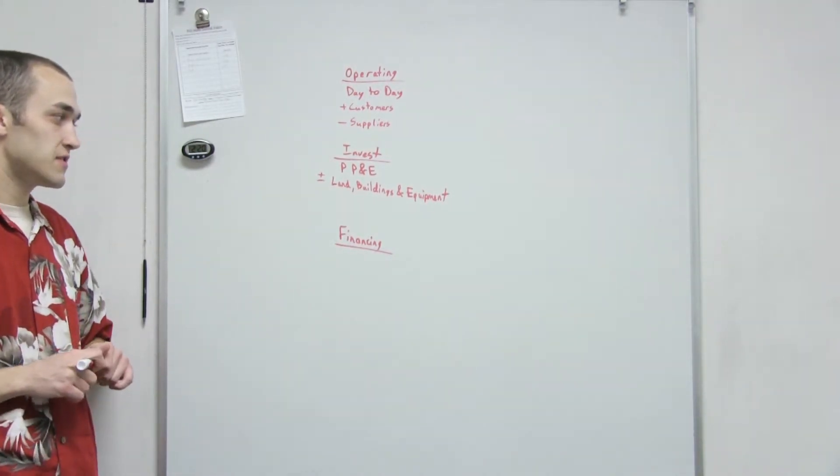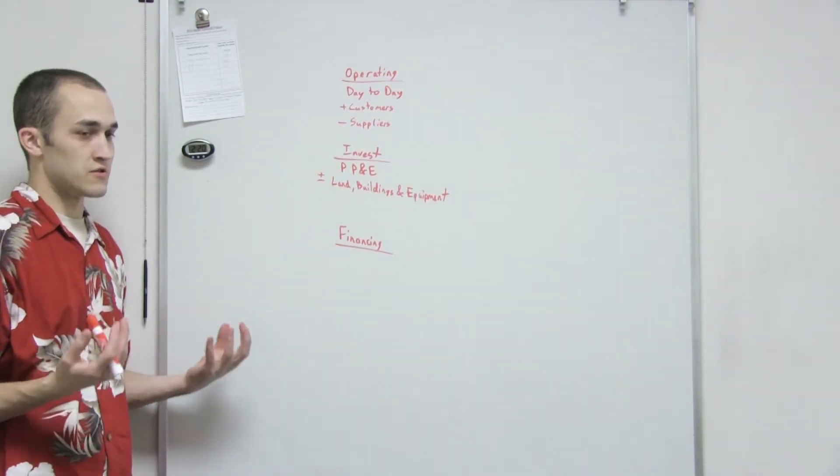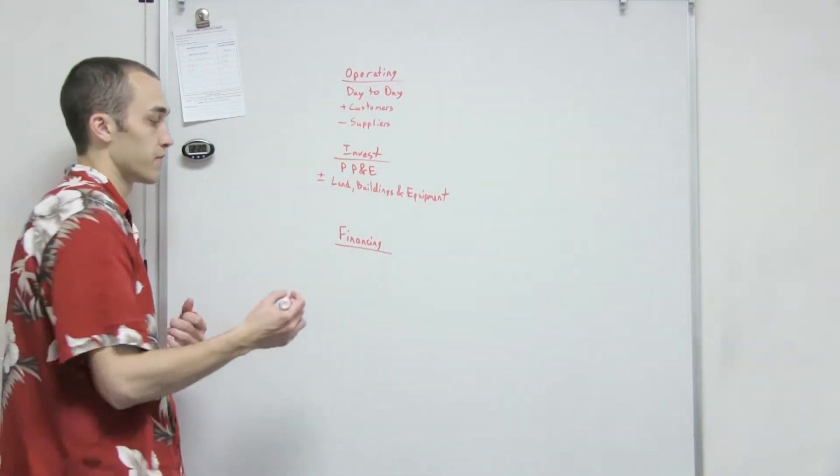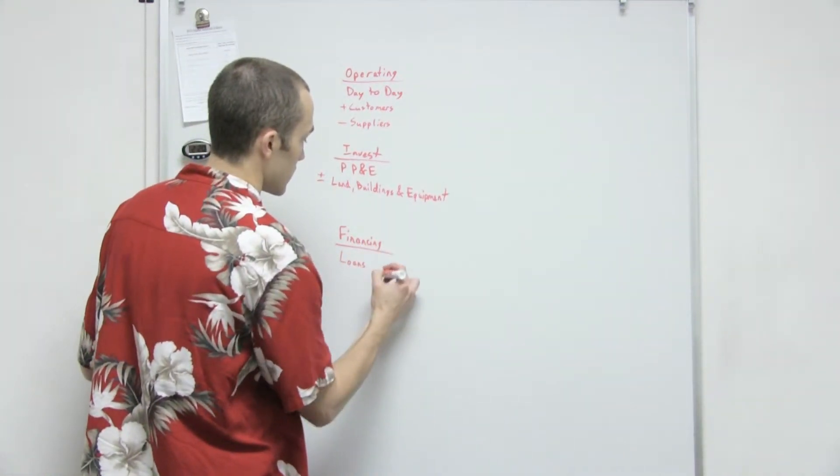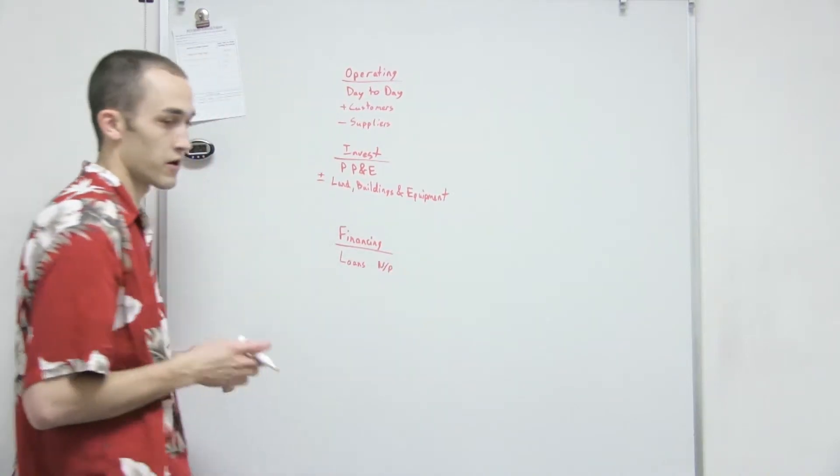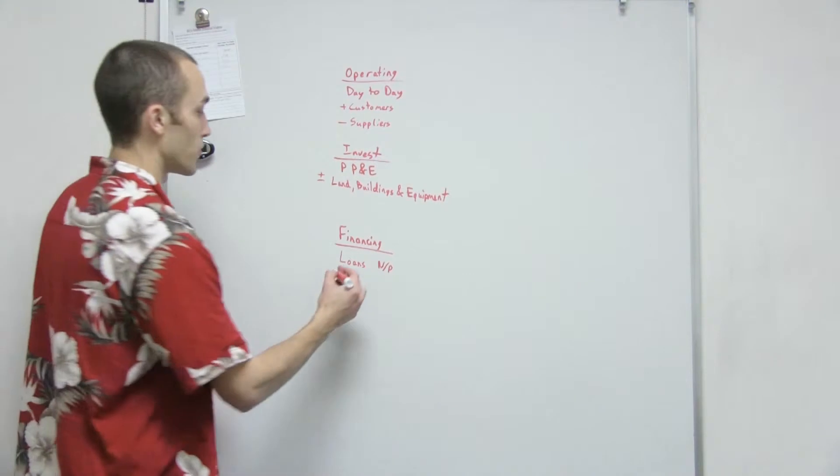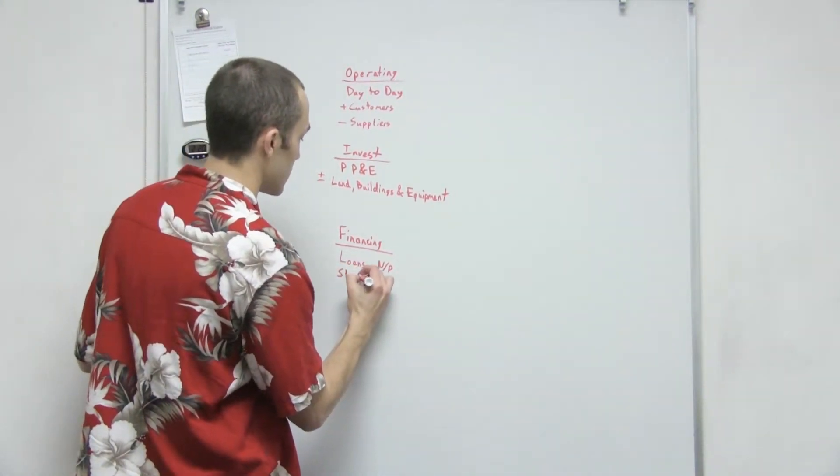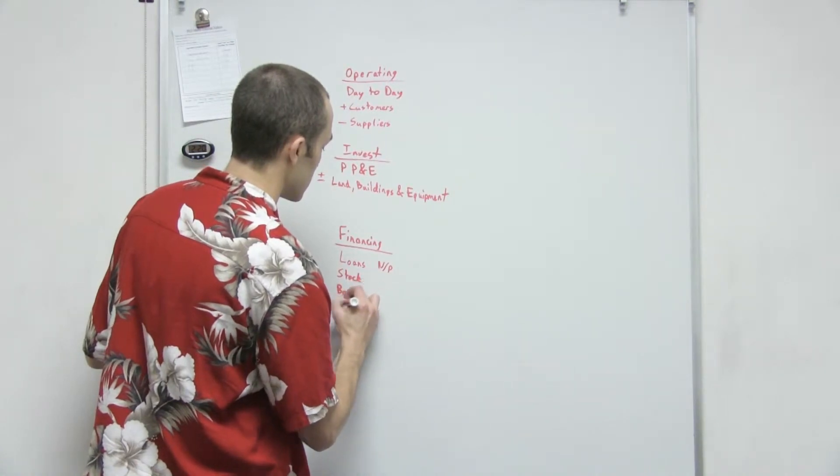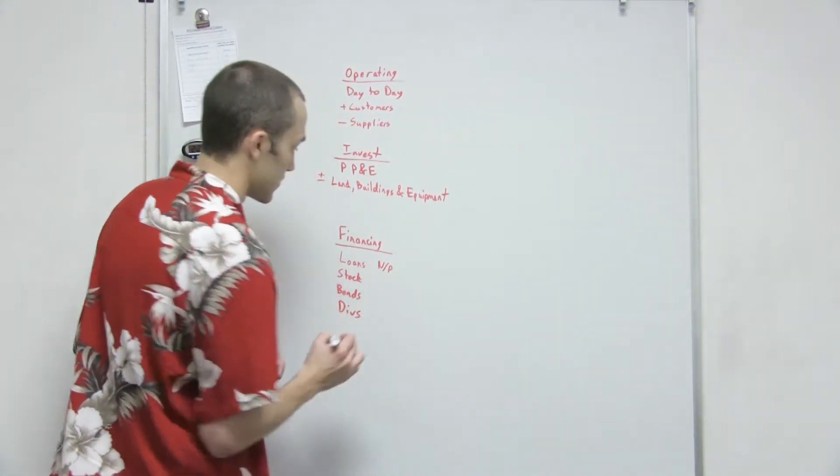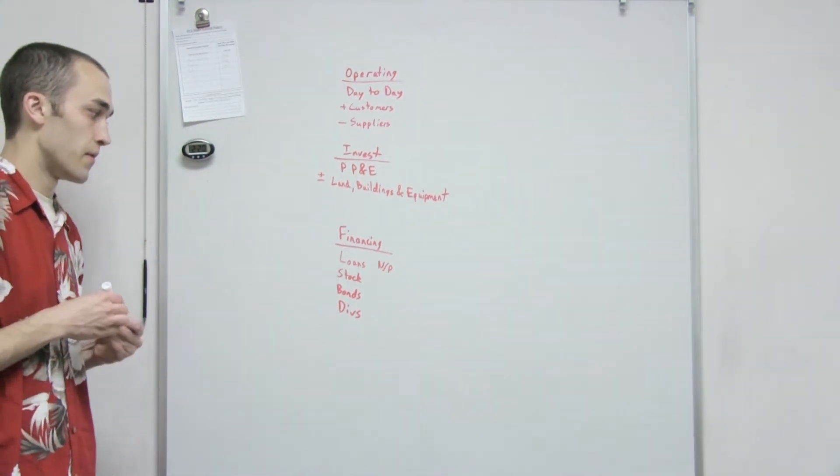And then the last one, financing. Those are just other ways you get money. A big one of those is going to be loans, or in other words, notes payable - that's what we call it in accounting. Stock will be one of those. Bonds and dividends.